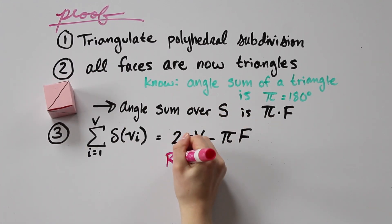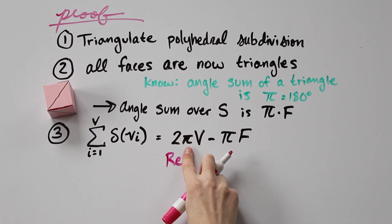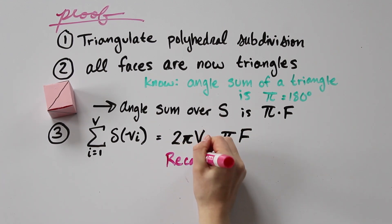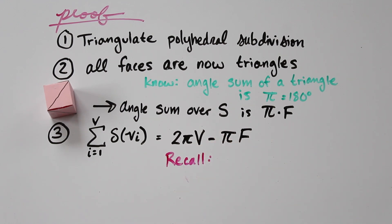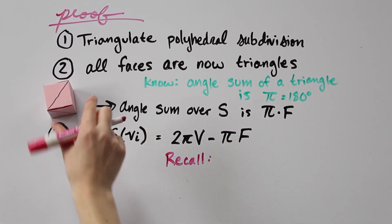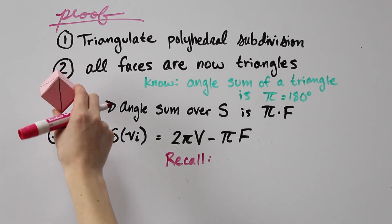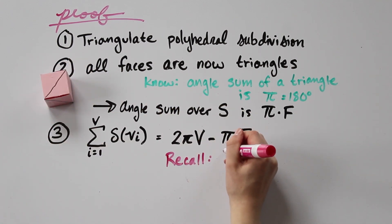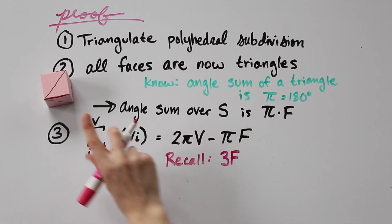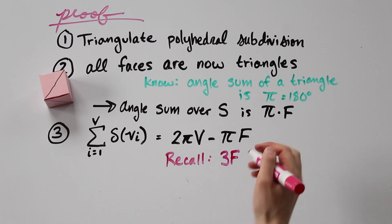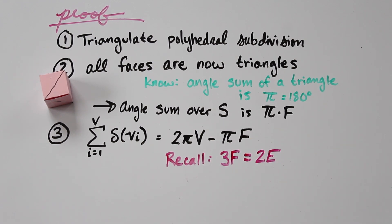Remember in part 2 how we counted the edges of the polyhedral torus by counting the faces instead? We're going to do that same thing here, except now we have triangular faces instead of squares. Each face has exactly 3 edges contained in it. Each edge is still contained in exactly 2 faces. So if we multiply the number of faces, F, by 3, then we should count every edge exactly twice. This gives us the expression 3F equals 2E.